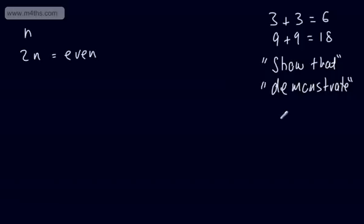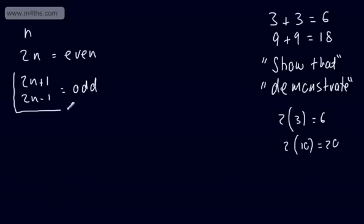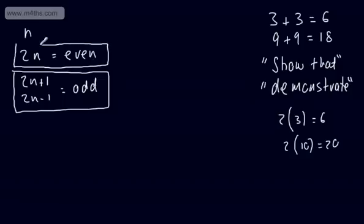Just think about that logically: 2 lots of any number — 2 lots of 3 is 6, 2 lots of 10 is 20 — these are all even numbers. Therefore, if we wanted an odd number, we could write 2N plus 1 or 2N minus 1, and these are going to be odd numbers. So what we've got is: any number N; even numbers represented as 2N; and odd numbers as either 2N plus 1 or 2N minus 1.